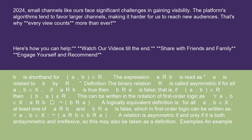A logically equivalent definition is: for all a, b ∈ X, at least one of a R b and b R a is false, which in first-order logic can be written as: for all a, b ∈ X, ¬(a R b ∧ b R a).